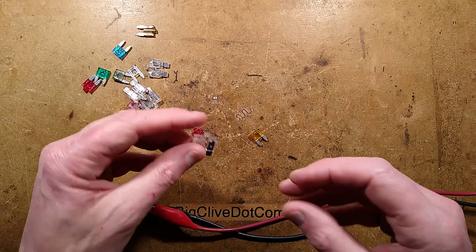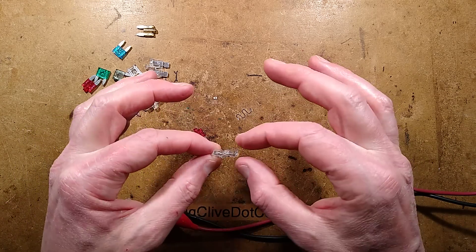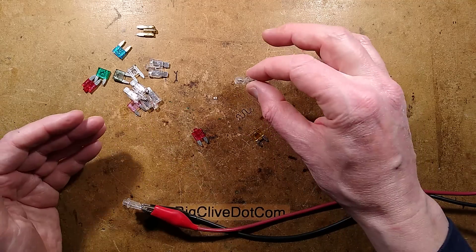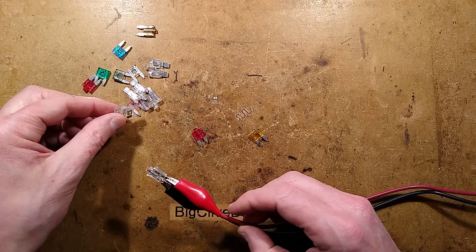Let's take a look at self-indicating fuses. These are fuses that you can plug in, in this case into a vehicle, and when they blow they light up to show you which fuse is blowing.